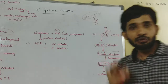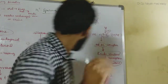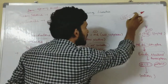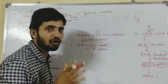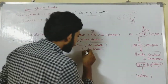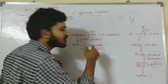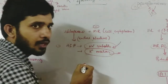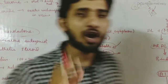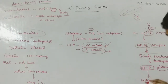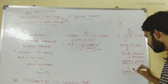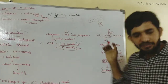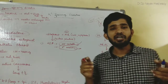Aldosterone-induced proteins have two different functions: they increase sodium reabsorption from the distal convoluted tubule and collecting duct of the nephron, and they cause potassium excretion. So aldosterone reabsorbs sodium and excretes potassium. This is the function of aldosterone-induced proteins, which are synthesized due to aldosterone release.